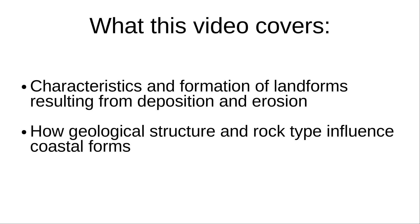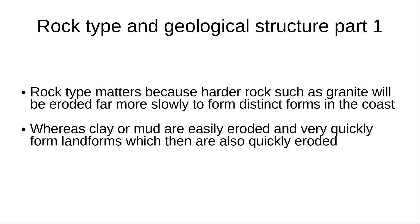There are a few ways that geological structure and rock type influence coastal forms. Rock type matters because harder rocks such as granite will be eroded far more slowly to form distinct forms in the coast, whereas clay or mud are easily eroded and very quickly form landforms, which are then also quickly eroded.